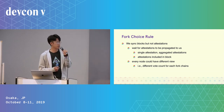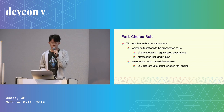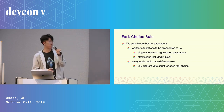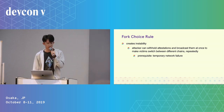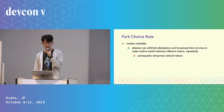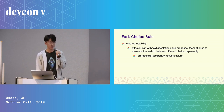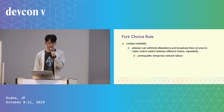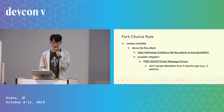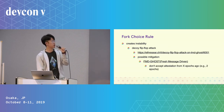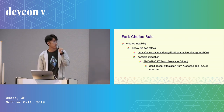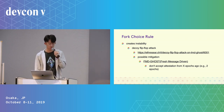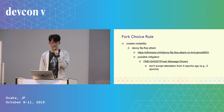Since we do not sync attestations, every node could receive different attestations at different times, so every node could have a different view and different vote counts for each fork chain. This creates a window for the attacker. The attacker can withhold attestations and broadcast them all at once to make victims switch between different chains repeatedly. There is a prerequisite for this attack — there must be a temporary network failure. One such attack is called the decoy flip-flop attack, and you can read more about it on the research forum.